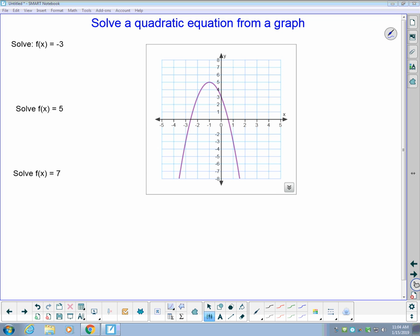Right now we have an equation of a quadratic that has already been graphed for us. In the first example, it's asking us to find f of x equals negative 3, the values of x that will make this function output a negative 3. We're looking for input or inputs that give us an output of negative 3.